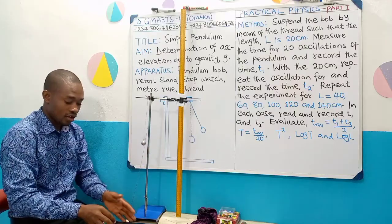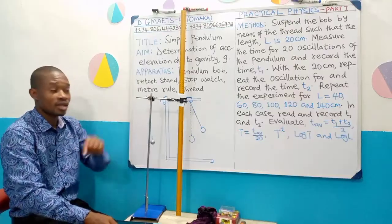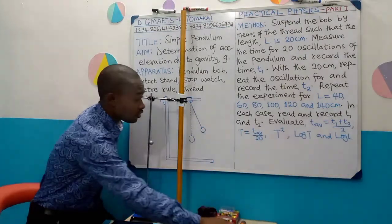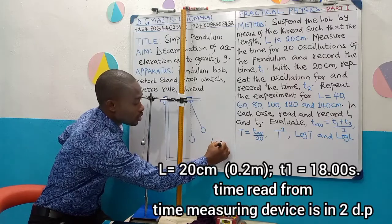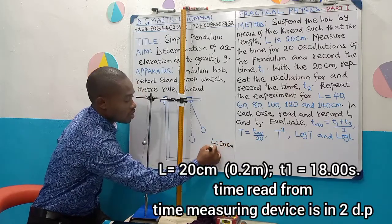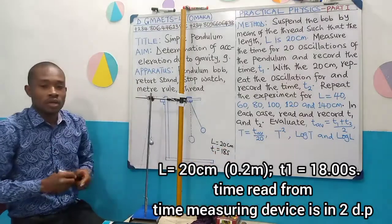Okay, so it gave me 18 seconds. That 20 oscillation gave me 18 seconds. I will have to take note of it. For the first experiment when L is equal to 20 cm, T1 is equal to 18 seconds.